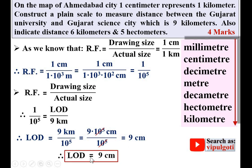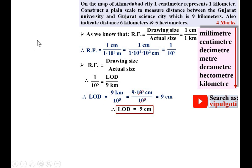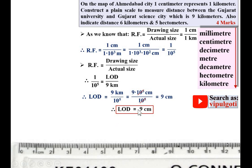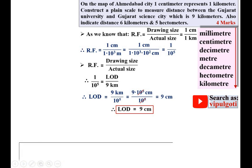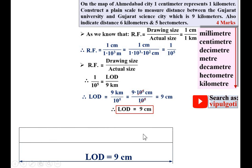Now start the drawing for the plain scale. Draw a horizontal line of 9 cm, add a vertical height of 1 cm, and complete the rectangle. Divide this scale into 9 equal divisions, since the maximum distance is 9 km — each division represents 1 km. Give numbering starting from 0, skipping the first division: 0, 1, 2, 3, 4, 5, 6, 7, 8. Draw vertical lines through all these points.